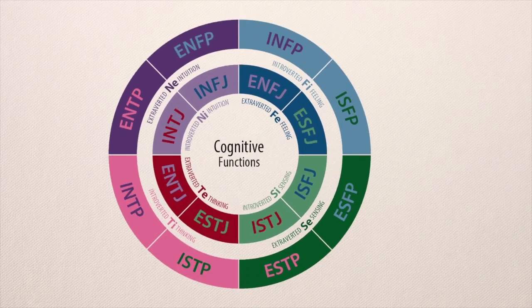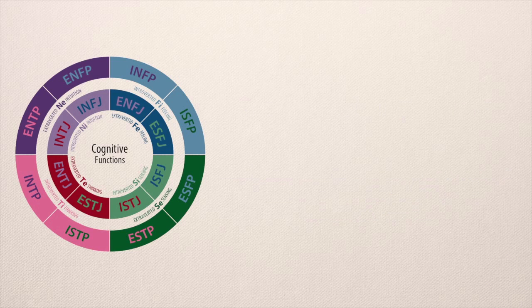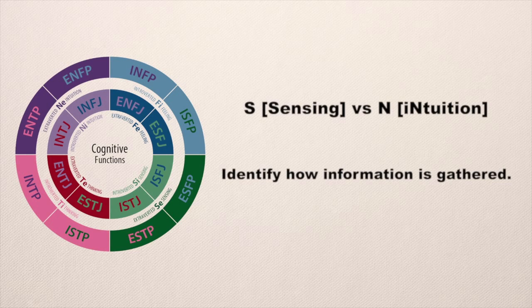The first pair is introvert and extrovert, which indicates whether energy is received from an inward world or an outward world. Some people like to work alone and get great satisfaction in being a solo performer, while others receive energy from working in larger teams — that's how you best work in a group. Another pair is sensing (S) or intuition (N), which identifies how information is gathered from the external world and how you make decisions.